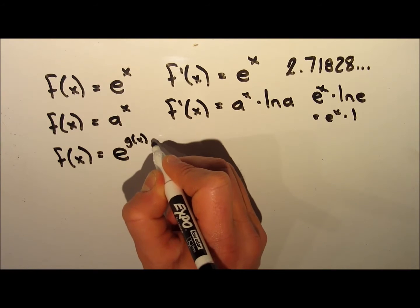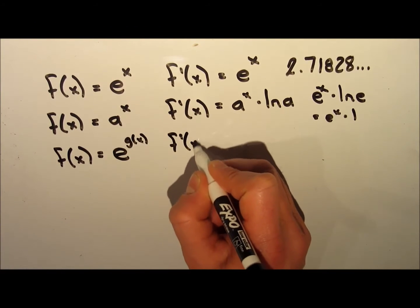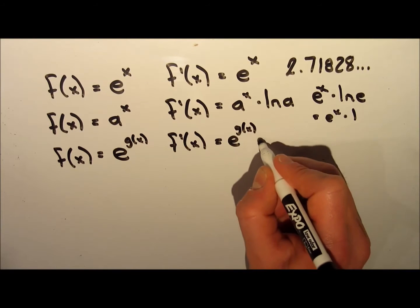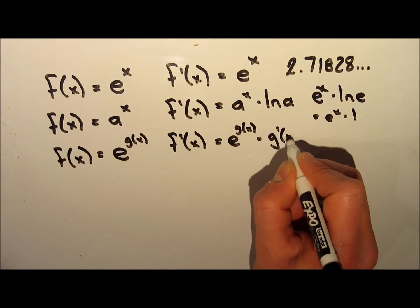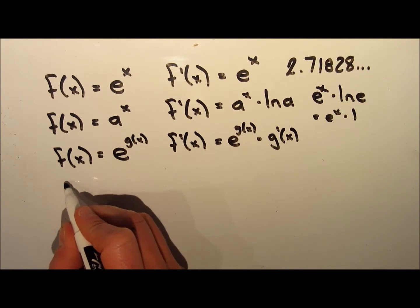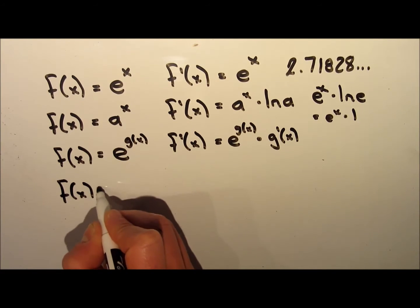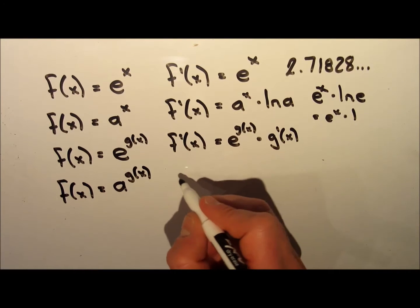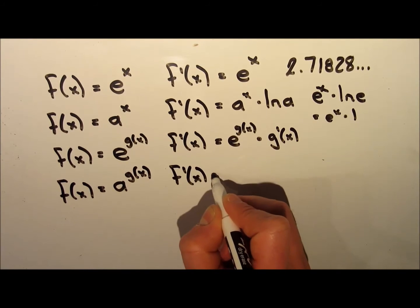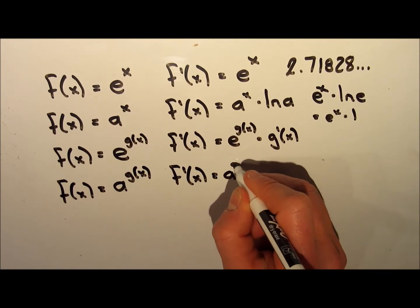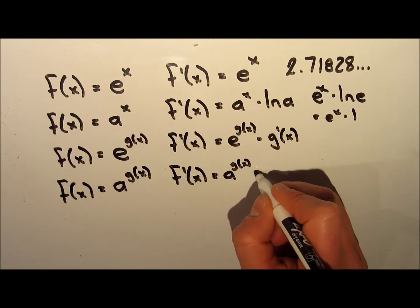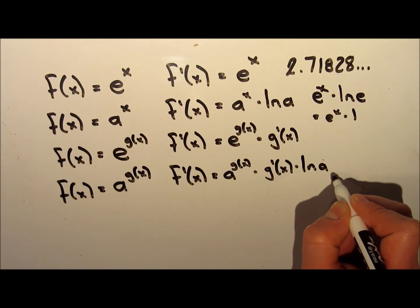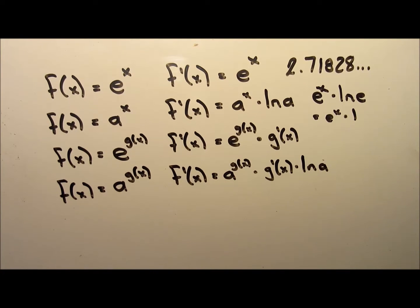The next one is a little more complex. The function is e to the exponent g(x), where g(x) is a more complicated part. The derivative of this is e^g(x) multiplied by g′(x). The last formula is f(x) = a^g(x), and the derivative is a^g(x) multiplied by g′(x), and then multiplied by ln(a). I'll show you some examples now and hopefully it'll make more sense.